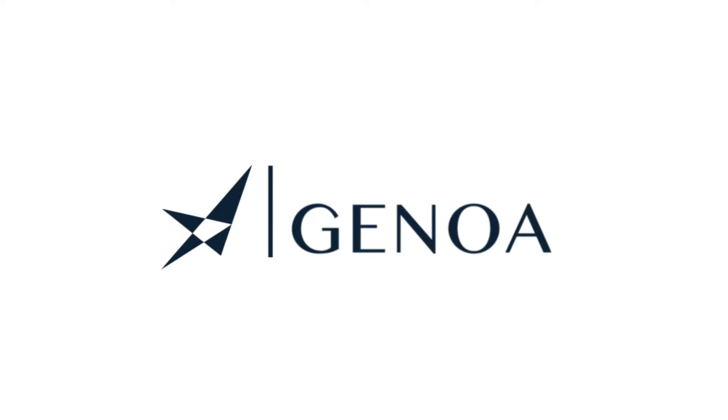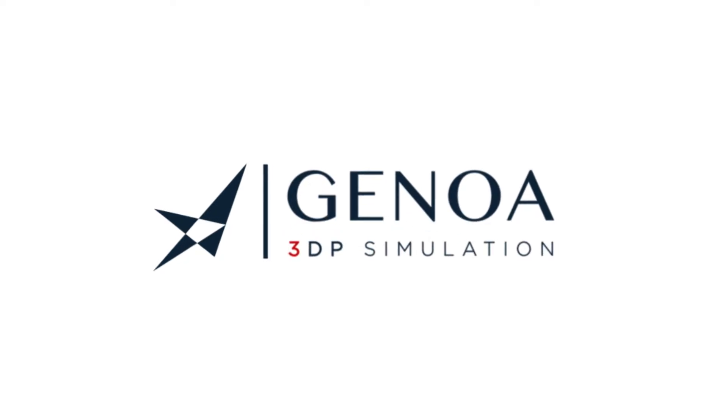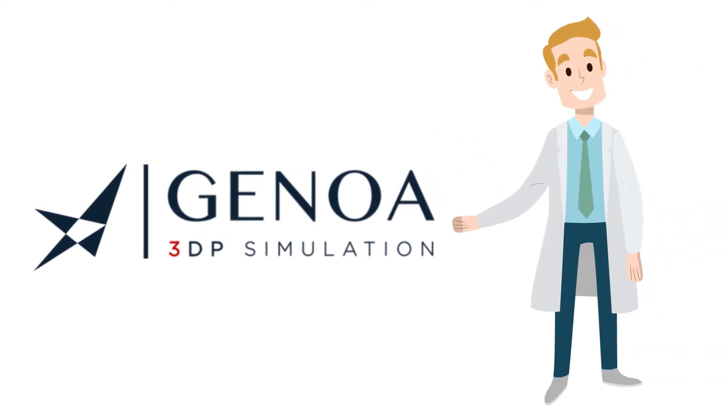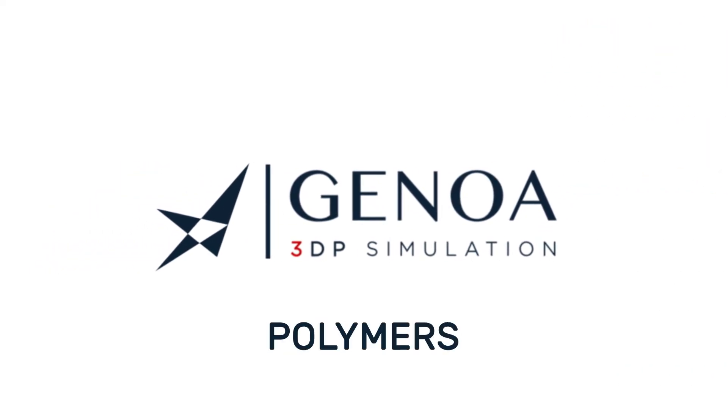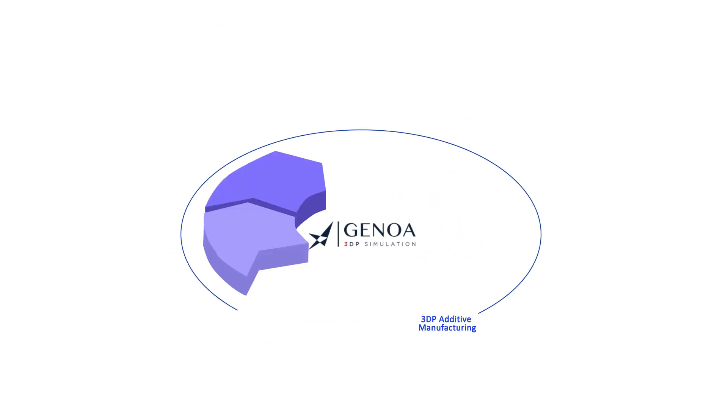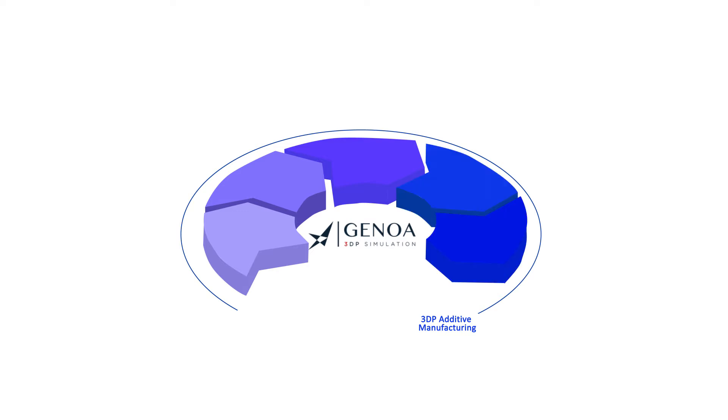Alphastar's additive manufacturing simulation solution, Genoa 3DP, combines multi-scale progressive failure analysis with material characterization to simulate the as-built 3D print process for polymers, metals, and ceramics. Genoa 3DP's user-friendliness and robust capabilities allow users to virtually qualify each step of the AM process.